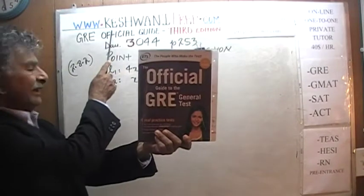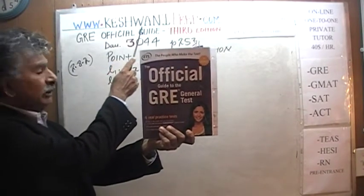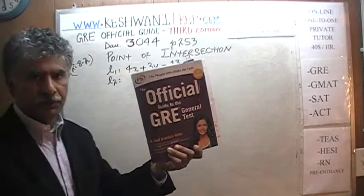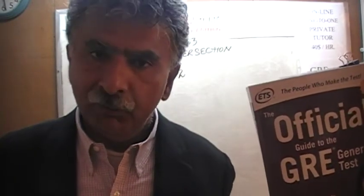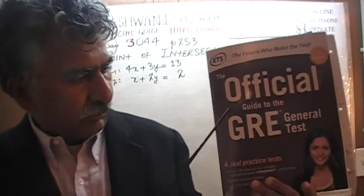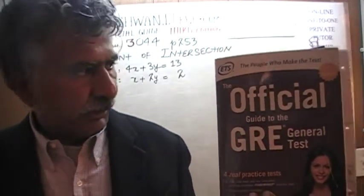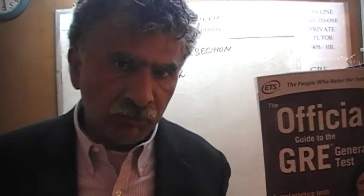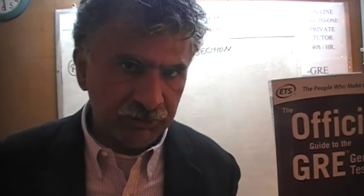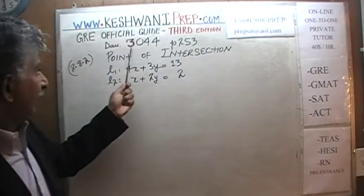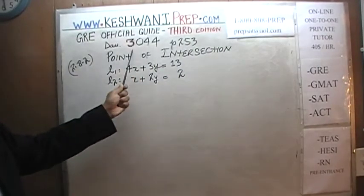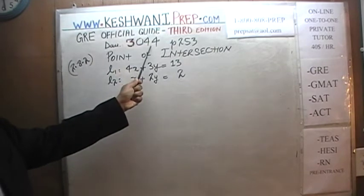Hello, my name is Keshwani — that's K-E-S-H-W-A-N-I. We are here because we want to prepare for the GRE. We have been solving math problems out of this book, the Official Guide to the GRE, third edition. If you do not own this book already, purchase one immediately. Today is our lesson number 44, Day 3044 — 3 to signify we are in the third edition, day 44.